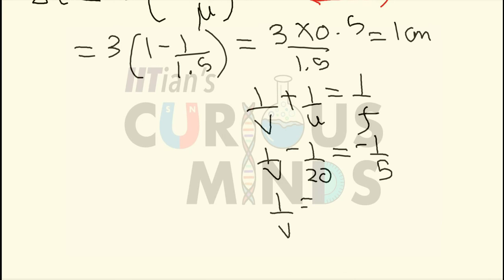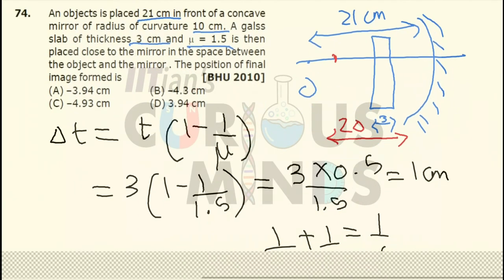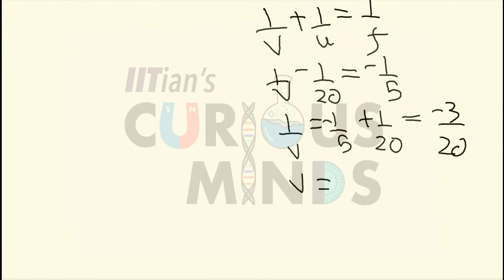So 1/v is equal to 1/f or -1/5 + 1/20. So it will come out to be -3/20 cm. So the image is formed on the left hand side by a distance, or v we can say, of 20/3 or -20/3.